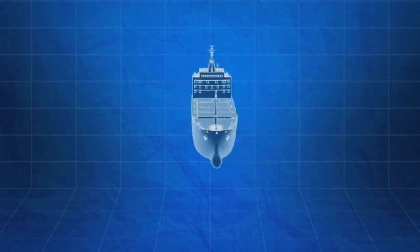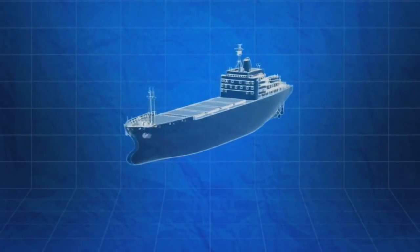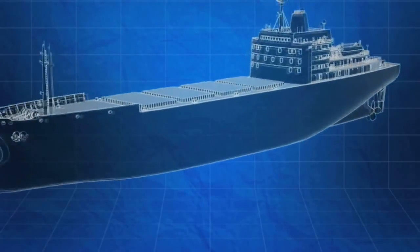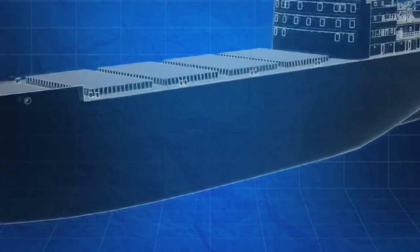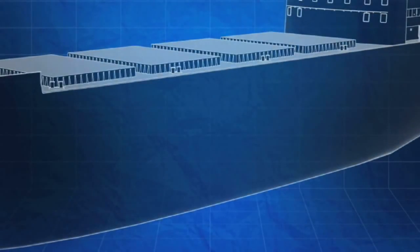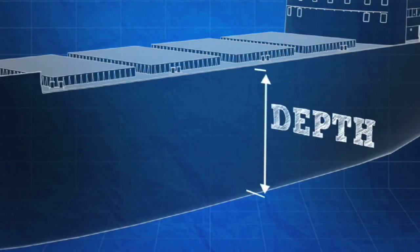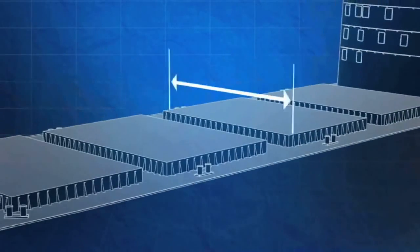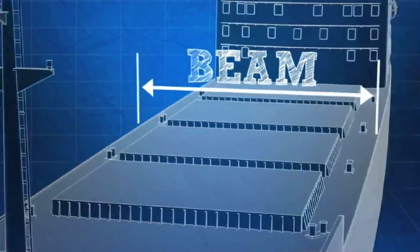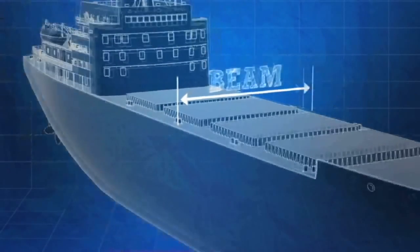The following are the standard terms used to describe the hull of a ship, even before it is put into the water. These first few terms are fairly basic. Depth is the height of a hull from the highest point of its main deck to its lowest point. A ship's beam, or breadth, is its width at its widest point.